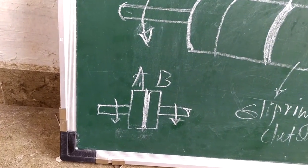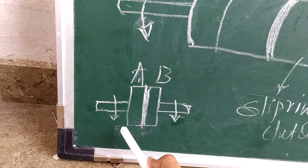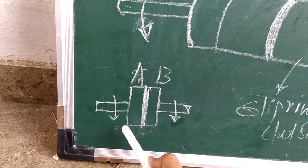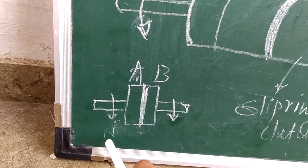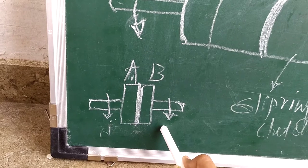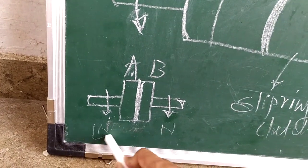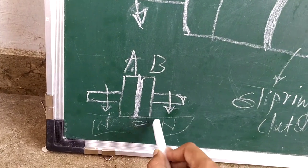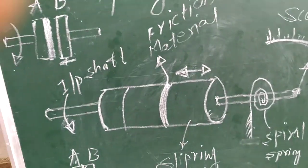Now after a certain time, the scenario will become that shaft A, if it is rotating with some RPM N, after some time similarly B will start rotating with the same speed. At that time we can say the clutch is fully engaged. Now this phenomenon of the clutch we are using here in the slip ring clutch tachometer.